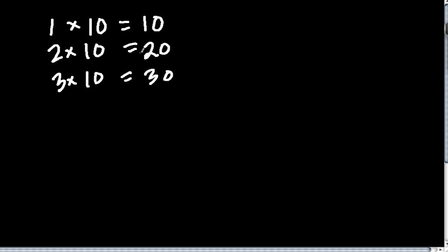Now you might see the pattern here. In the first case, we'd have the number 1 times 10, and we got 10. 2 times 10 is 20. 3 times 10 is 30.